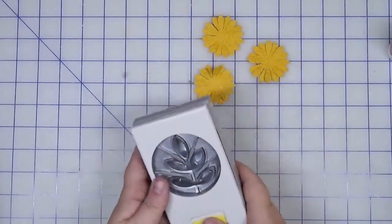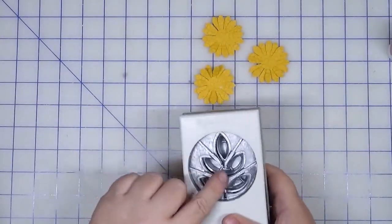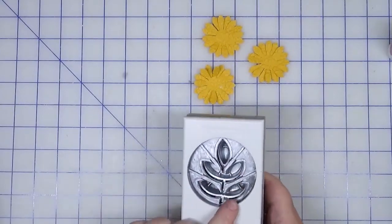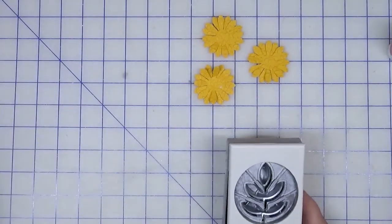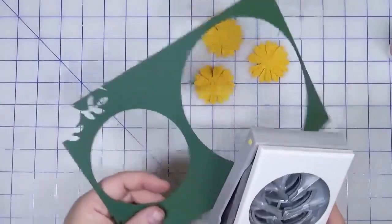We're going to take our bigger leaf punch and we are actually only going to use these three top ones. We do not need the full gamut, and we're going to start with the scraps again to see what we can get out of here.